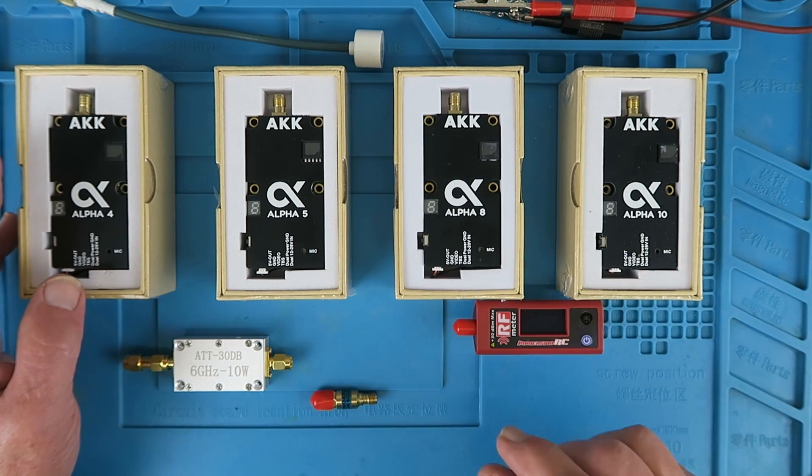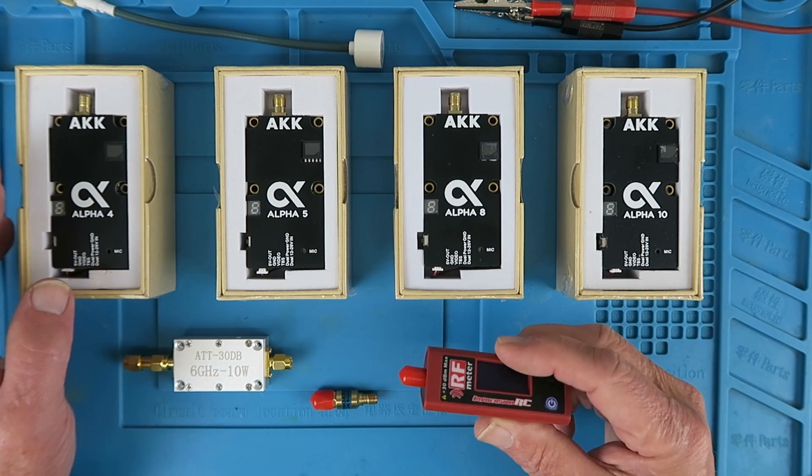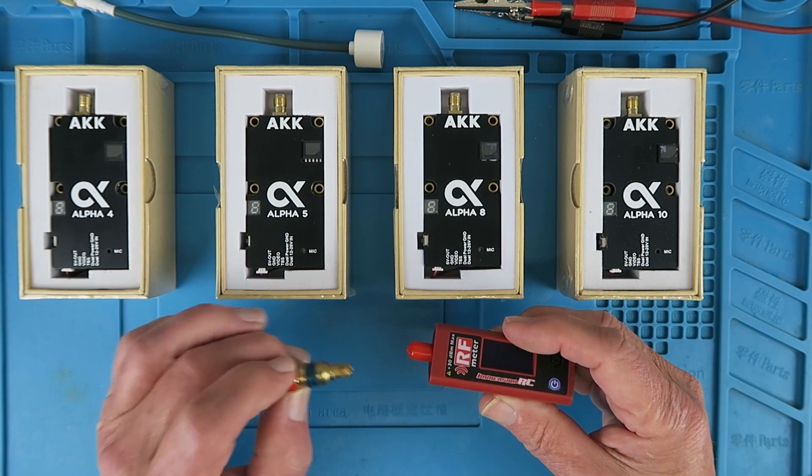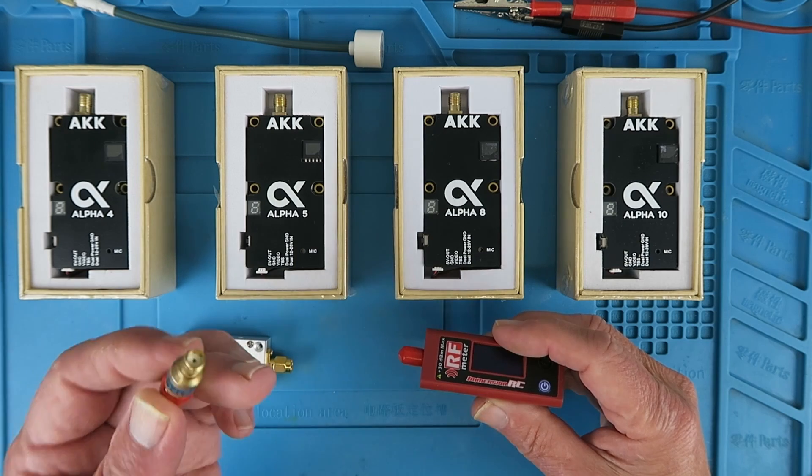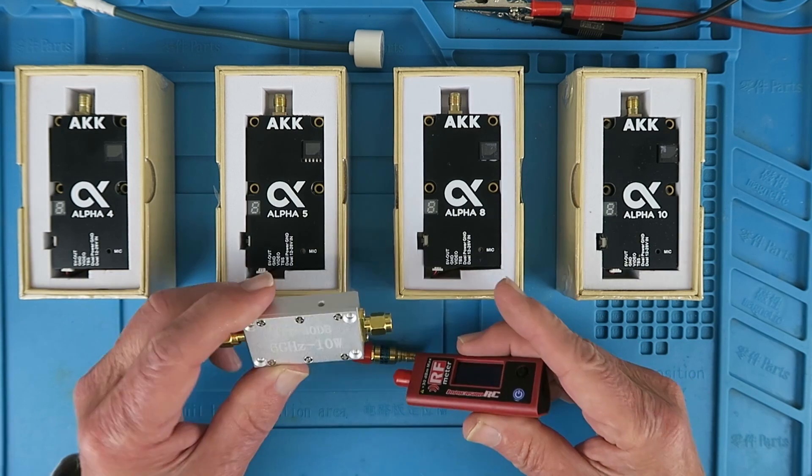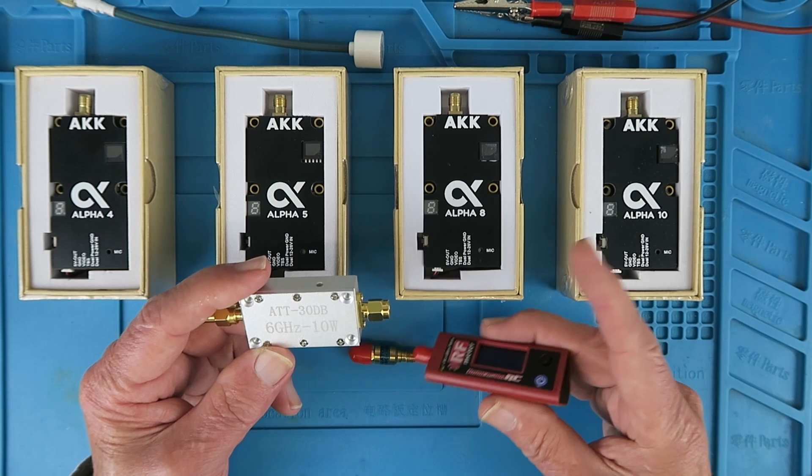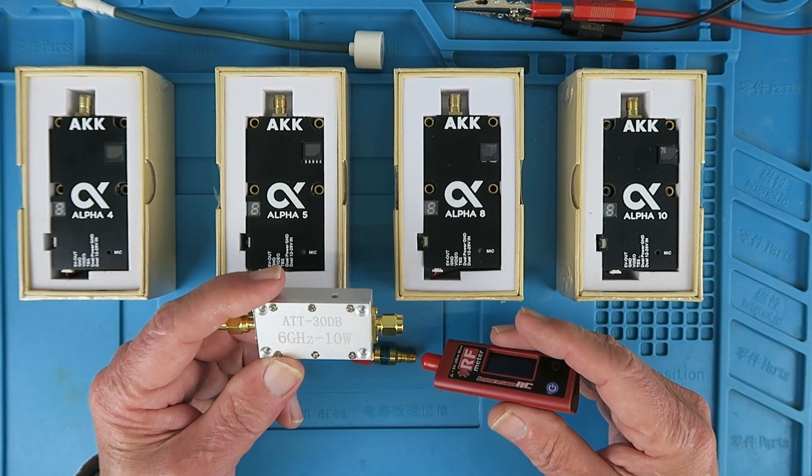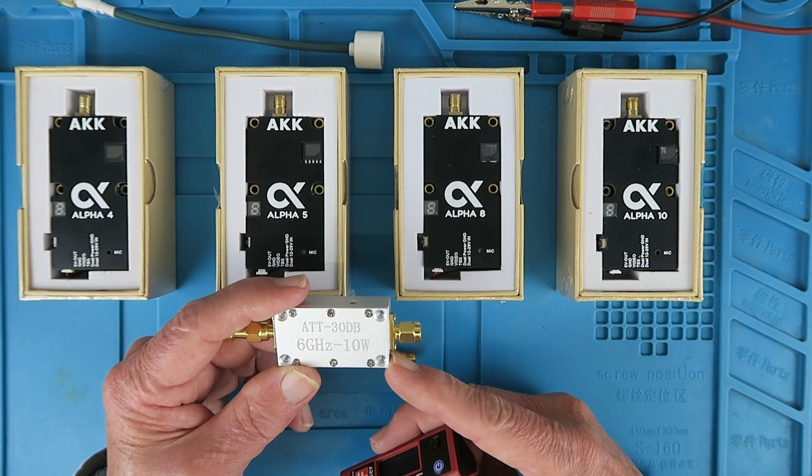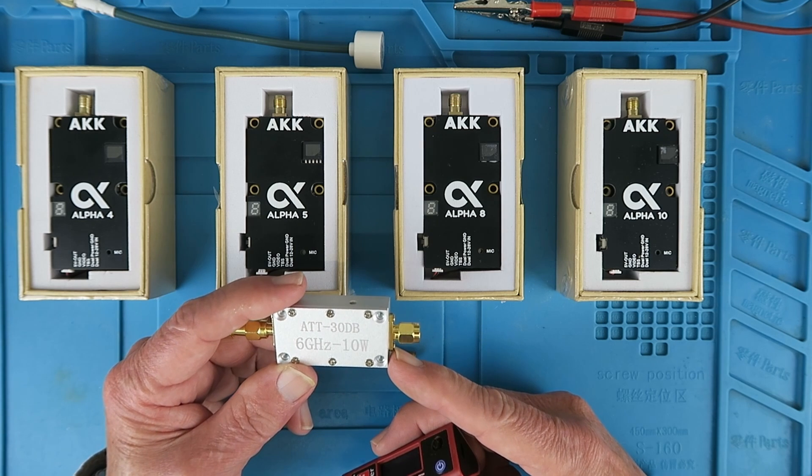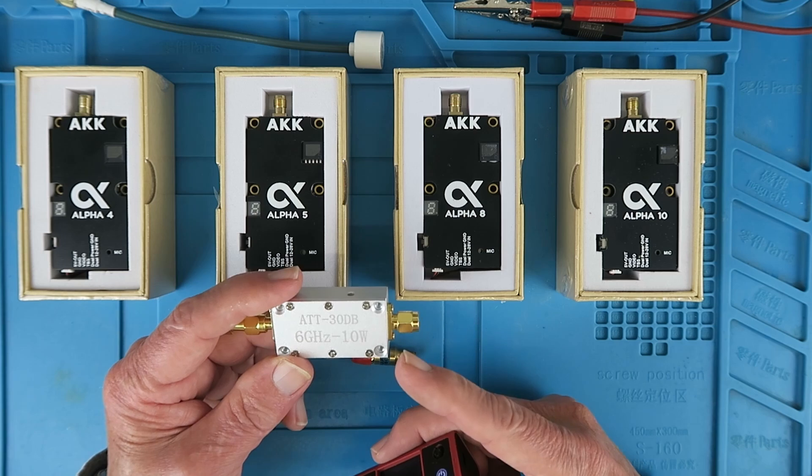In that video, I was only able to use my little power meter to measure up to 2 watts, as the only attenuator I had was this 3 dB one. Clearly, to measure these guys up to the 10 watts, something larger was required, and I therefore went and bought this 30 dB attenuator, 6 gigahertz, at up to 10 watts.